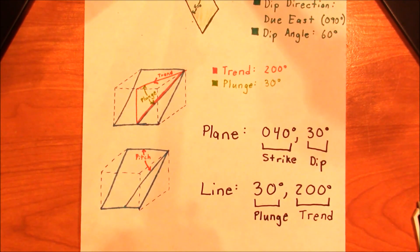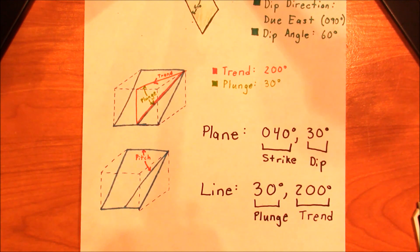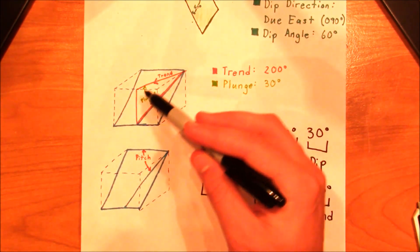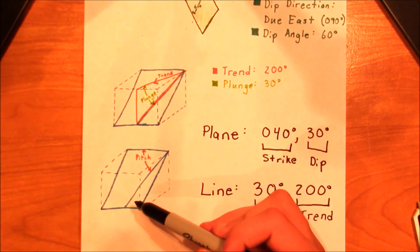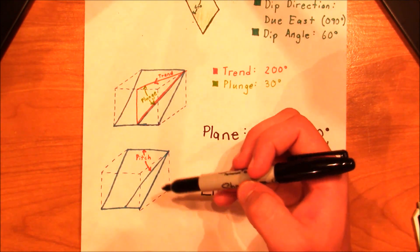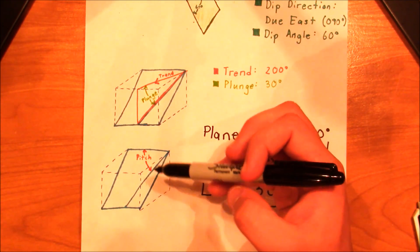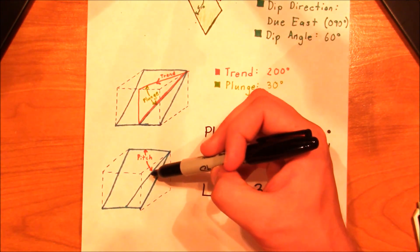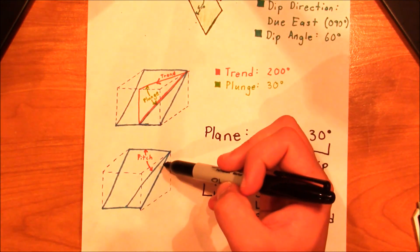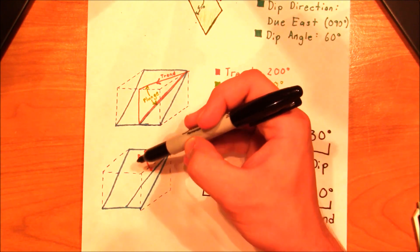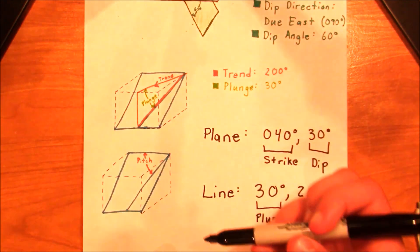Another important component when evaluating lines in space is the pitch or rake of the line. Imagine we have this same scenario — a line on a plane — and we want to know its pitch. The pitch of the line is the angle within the plane between a horizontal line and the line of interest itself. That angle right here is the pitch or rake of the line.